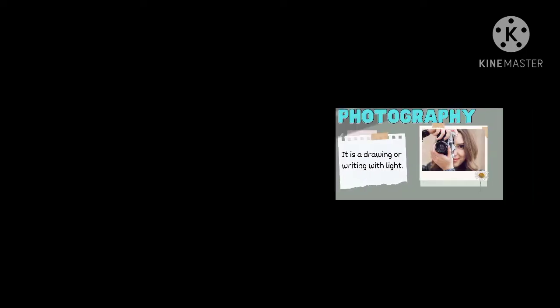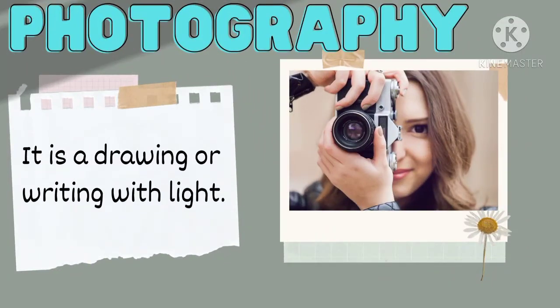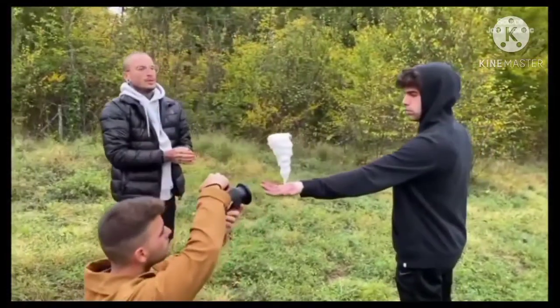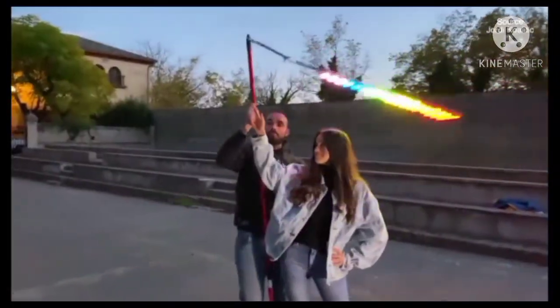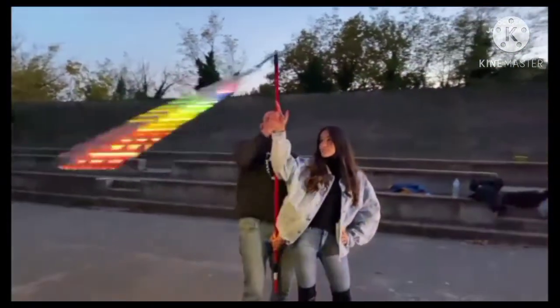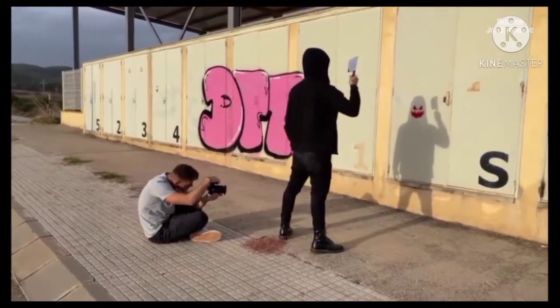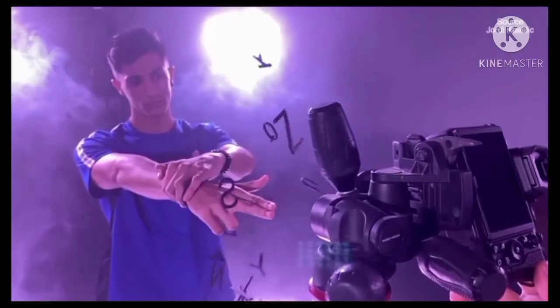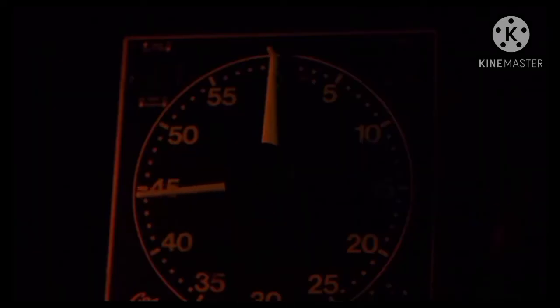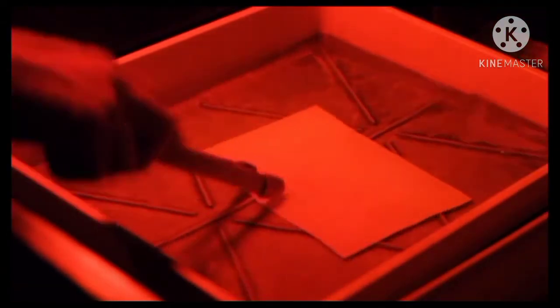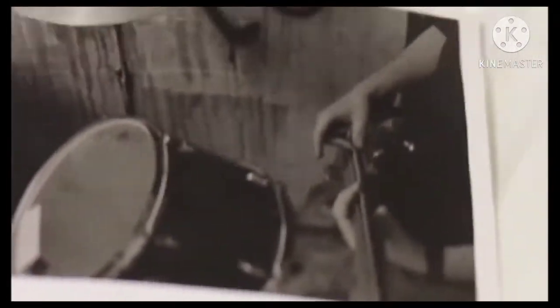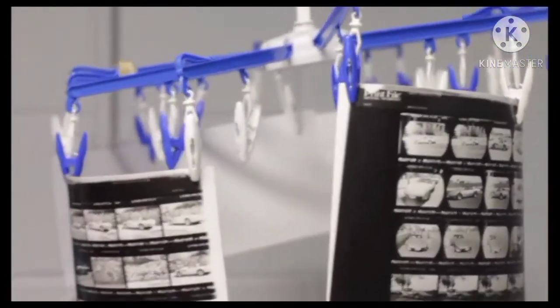Photography is drawing or writing with light. A camera is used to capture images recorded on film or a negative. The image undergoes three steps in the darkroom involving chemical procedures. The first stage is choosing the subject, the second is the mechanical process involving camera operation and focusing, and the third is the chemical process involving the development of the film using the negative.